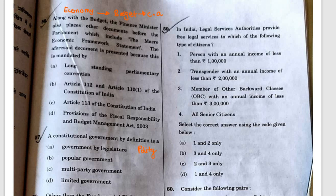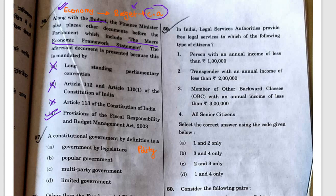Question 56: Along with the budget, the finance minister places other documents before parliament, including the macroeconomic framework statement. This was studied in the economy portion related to current affairs from January and February 2020. The macroeconomic framework statement is mandated by the provisions of the FRBM Act 2003. Correct answer is D. This framework statement contains assessment regarding GDP growth rate, fiscal balance of central government, and external sector balance.